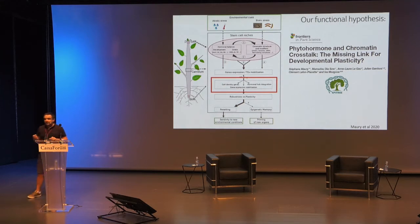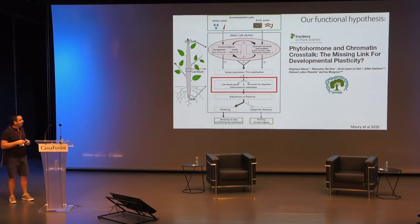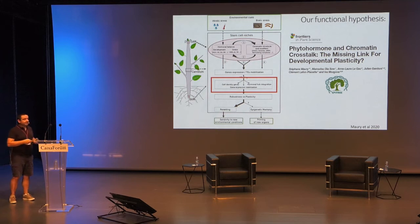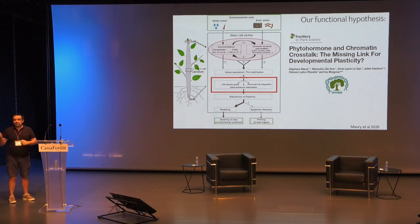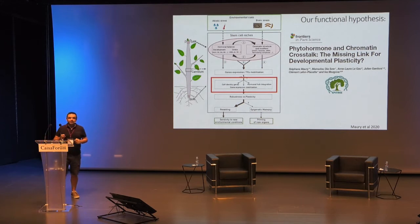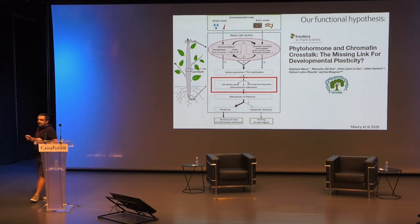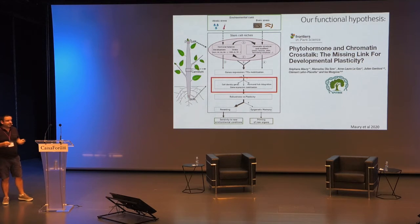Most of the time epigenetic marks are reset, and we can expect that this allows sensitivity to a new environmental condition. In some cases, there is a memory, and this can lead to epigenetic priming. And if you are in shoot apical meristem, you can have also intergenerational and transgenerational phenomena because there is no germline — gametes come from somatic cells in the shoot apical meristem.